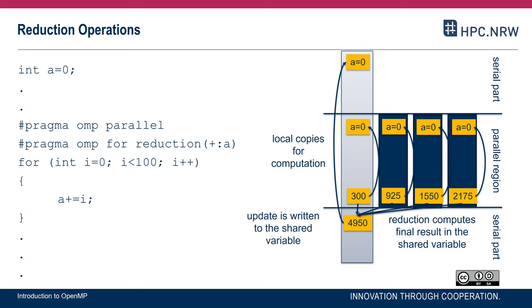Here is a summary of a reduction. We have a parallel region with omp for and a reduction on variable A, adding up the numbers from 0 to 99 into variable A. A is declared initially as a variable in the memory of the initial thread. Then in the parallel region — assuming four threads — a new instance of A is initialized with the neutral element for addition, one per participating thread. They work with their local copies and produce partial results. The reduction clause ensures the final sum is computed and the update is written back to the original shared variable.